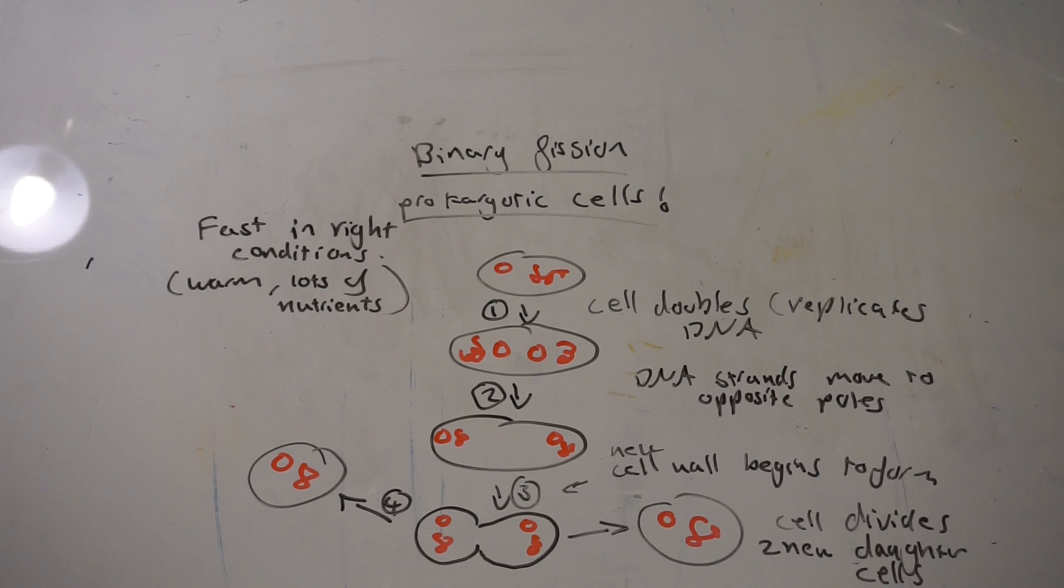Once that's happened, the cytoplasm begins to divide, as we can see in step three. Although I haven't drawn it particularly well, a new cell wall begins to form, so the cell begins to split.